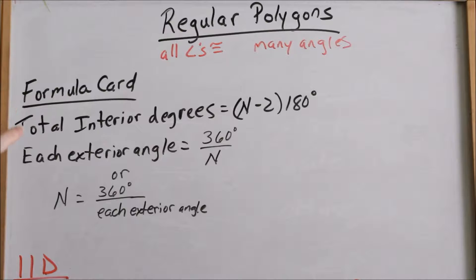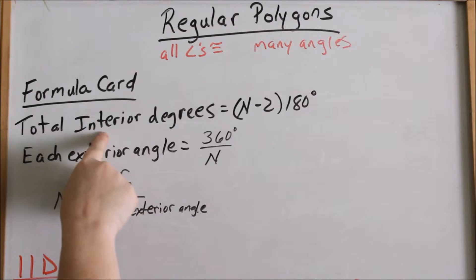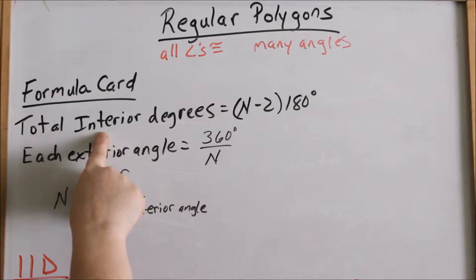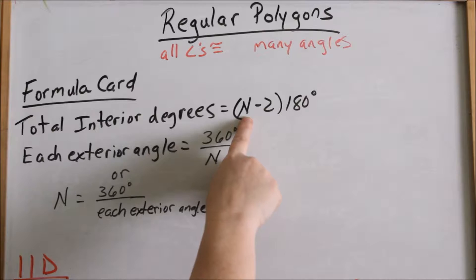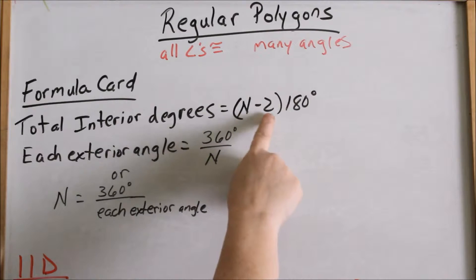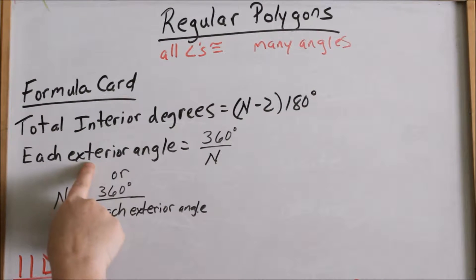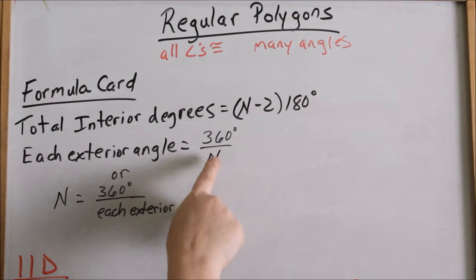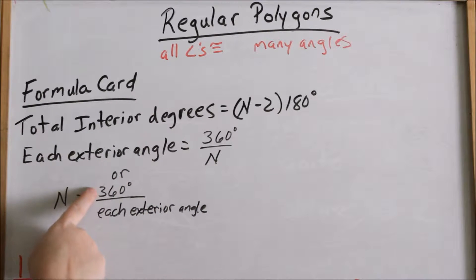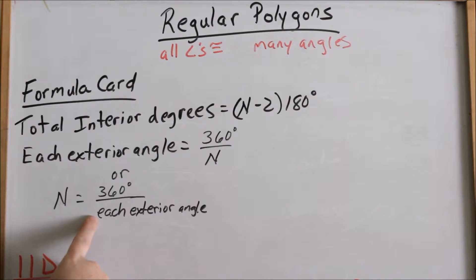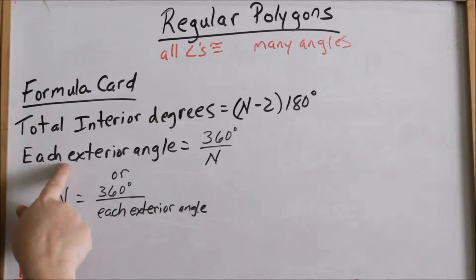If you're keeping up with the formula card, here are some formulas to write down. The total interior degrees is n minus 2 times 180 degrees, where n represents the number of sides of your polygon. Another formula: each exterior angle equals 360 degrees divided by the number of sides. Or rewritten: the number of sides equals 360 degrees divided by each exterior angle — these are the same formula, just with n on different sides.